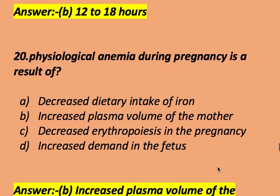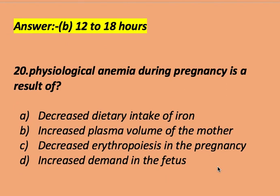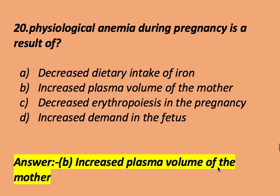Physiological anemia during pregnancy is a result of: decreased dietary intake of iron, decreased plasma volume of the mother, decreased erythropoiesis in pregnancy, or increased demand on the fetus. The right answer is increased plasma volume of the mother. Physiological anemia during pregnancy is a result of increased plasma volume of the mother.